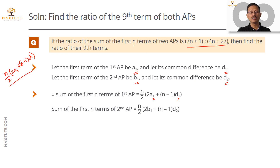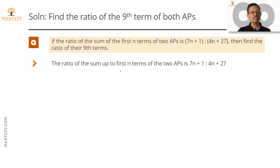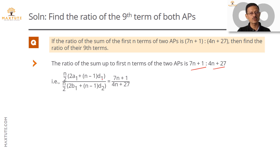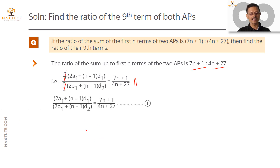The ratio of the sum of the first n terms of both APs equals 7n+1 to 4n+27. Writing that out: [n/2 · (2A1 + (n−1)D1)] / [n/2 · (2B1 + (n−1)D2)] = (7n+1)/(4n+27). Cancelling the n/2 in both terms, it simplifies to (2A1 + (n−1)D1) / (2B1 + (n−1)D2) = (7n+1)/(4n+27). Let's call this Equation 1.